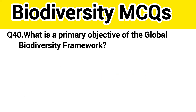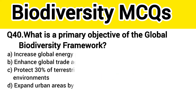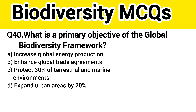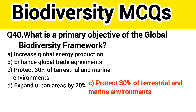Question number 41. What is the primary objective of the global biodiversity framework? The right answer, option C: Protect 30% of terrestrial and marine environments.